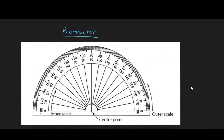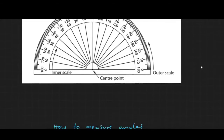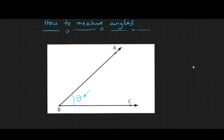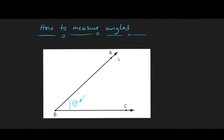How do we measure angles? We use an instrument called a protractor. A protractor has a central point, an inner scale, and an outer scale. Both scales can be used to measure angles. In the example, we will see how we can use a protractor to measure the angle between the two arms AB and BC.